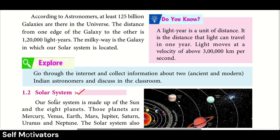In part 1, we will talk about the universe and the origin of the universe in detail. According to the astronomers, at least 125 billion galaxies are there in the universe. Astronomers' analysis tells us that we have 125 billion galaxies in the universe.